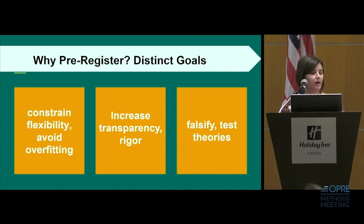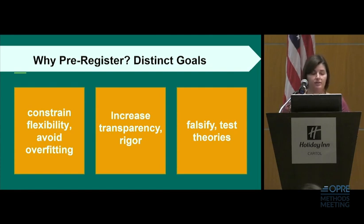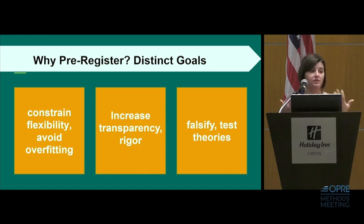If we make decisions about how we're going to analyze the data based on the data that we've collected, we run the risk of making our conclusions too specific to that particular sample or that particular study. By setting our decisions ahead of time, we can reduce the possibility of strategically using flexibility to get a statistically significant result.